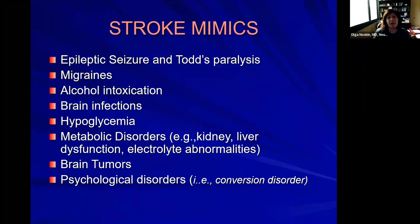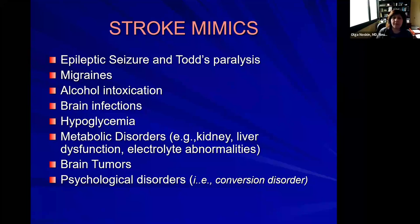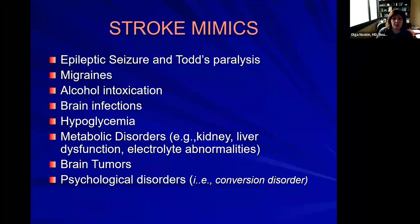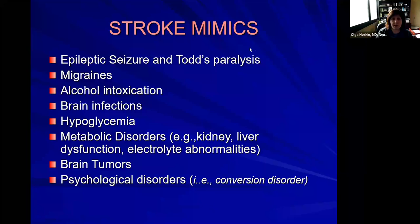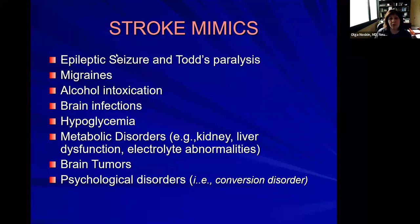There are other conditions that can look like strokes — that's really for doctors, to show how difficult it is to decide if somebody is having a stroke. These stroke mimics include seizures, migraines, intoxication, infections, brain tumors, and certain psychological disorders. We scratch our heads quickly and always err on the side of caution — we always consider something to be a stroke first.